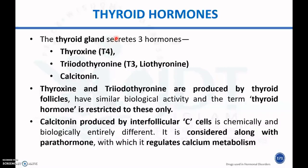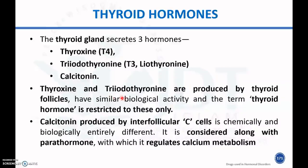The thyroid gland secretes three hormones: thyroxine (T4), triiodothyronine (T3), and calcitonin. The first two are known as thyroid hormones, while calcitonin regulates calcium metabolism. Thyroxine and triiodothyronine are produced by thyroid follicles, have similar biological activity, and are collectively termed thyroid hormones.